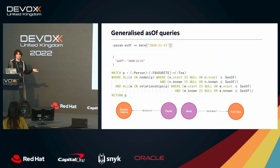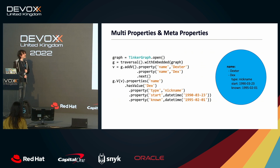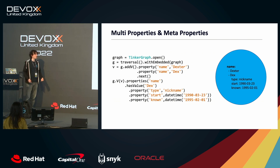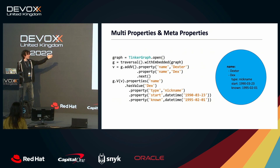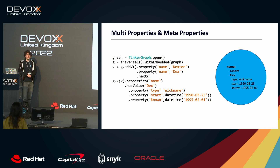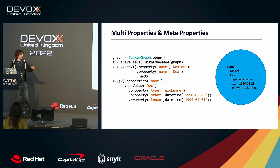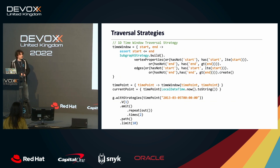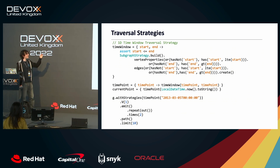If we're using TinkerPop it gets even nicer, because we can use multi-properties and meta-properties. A multi-property is a property that can have multiple values. For example, I have a nickname — we can put meta-properties on that nickname property: when I started having it and when I first knew about it, since my parents were probably calling me Dex long before I was sentient enough to realize. This lets us abstract the temporal logic further using TinkerPop's concept of a traversal strategy.